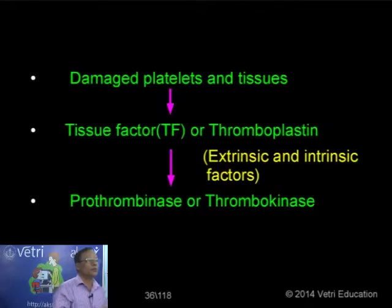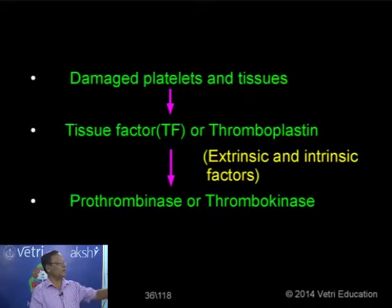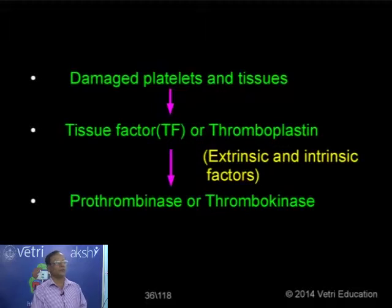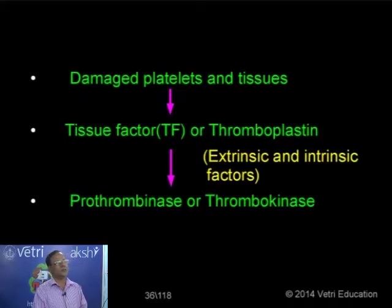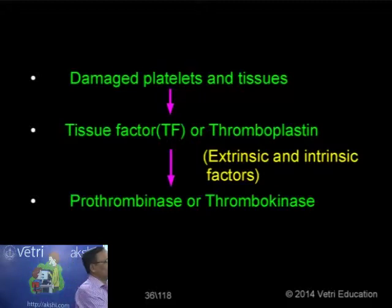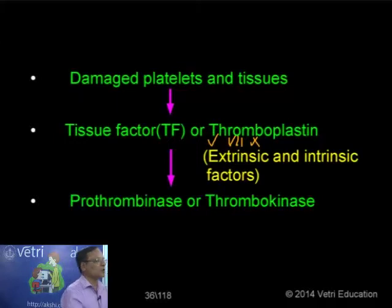The next step is the conversion of prothrombin to thrombin. During the first step, from damaged platelets and tissues, we receive the tissue factor or thromboplastin. We have both extrinsic and intrinsic factors. Extrinsic factors — factors 5, 7, 10 — are circulating in the blood. Intrinsic factor is the thromboplastin or tissue factor. In the presence of these, they form a complex called prothrombinase or thrombokinase.